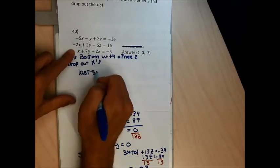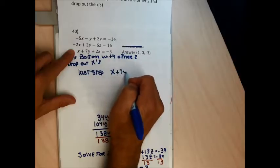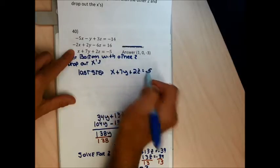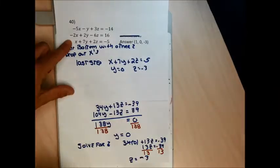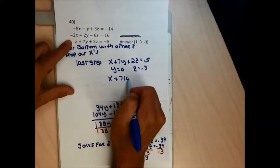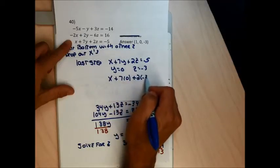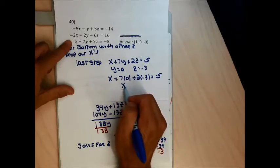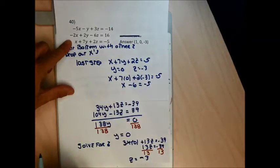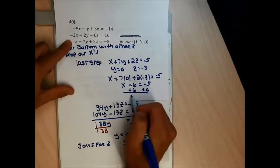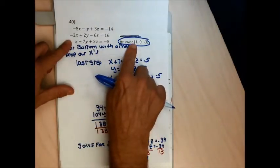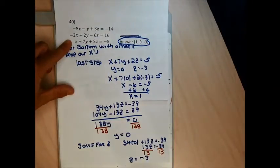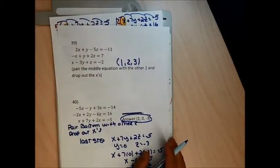For the last step, I'll use the bottom equation: x plus 7y plus 2z equals negative 5. I like equations with a positive x. Plugging in y equals 0 and z equals negative 3: x plus 7 times 0 plus 2 times negative 3 equals negative 5. That gives x minus 6 equals negative 5. Adding 6 to both sides gives x equals 1. The answer is the ordered triple (1, 0, negative 3).